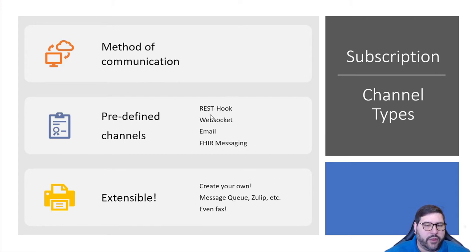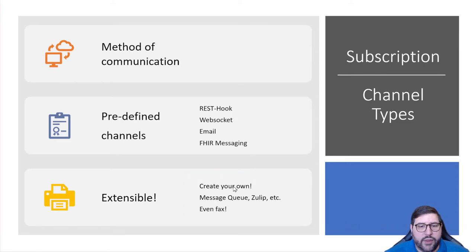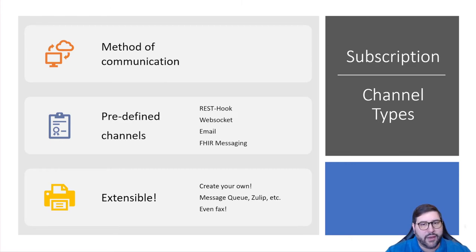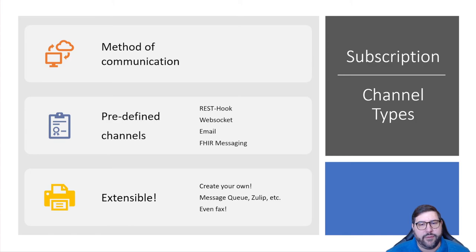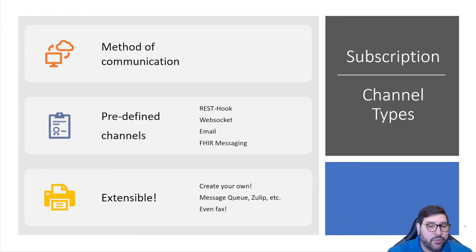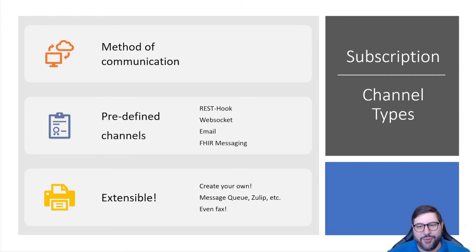We know predefined channels won't cover everything, so we left it extensible — you can define your own channel types. Suggestions include specific message queues: define a channel for your message queue type and that's it. As a test we did Zulip, which the HL7 FHIR community uses extensively for text communication, and we can send notifications there from the reference implementation so you can test and see what they look like. And you can do whatever else — even fax, which someone is actually implementing via a fax gateway due to requirements.